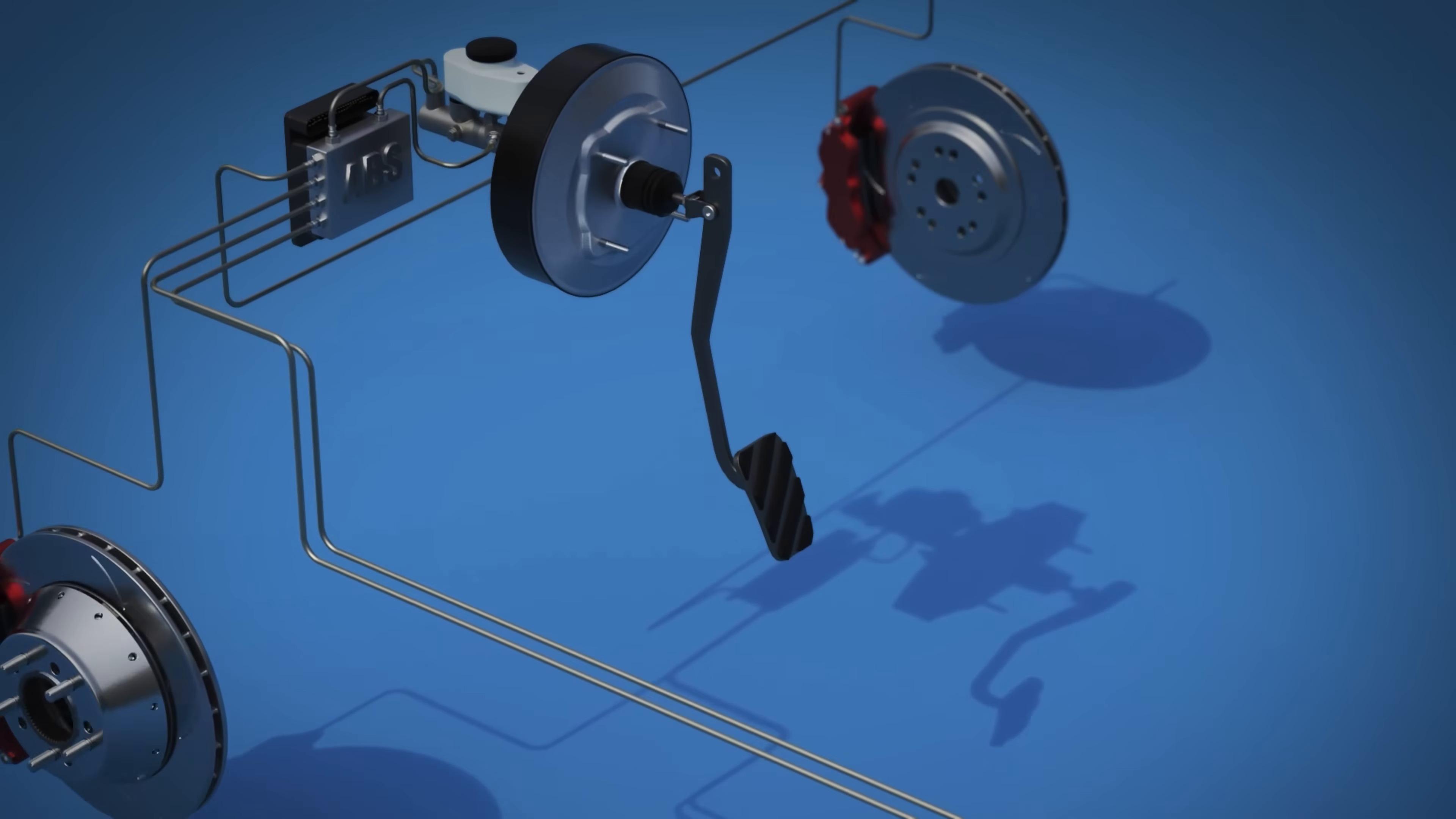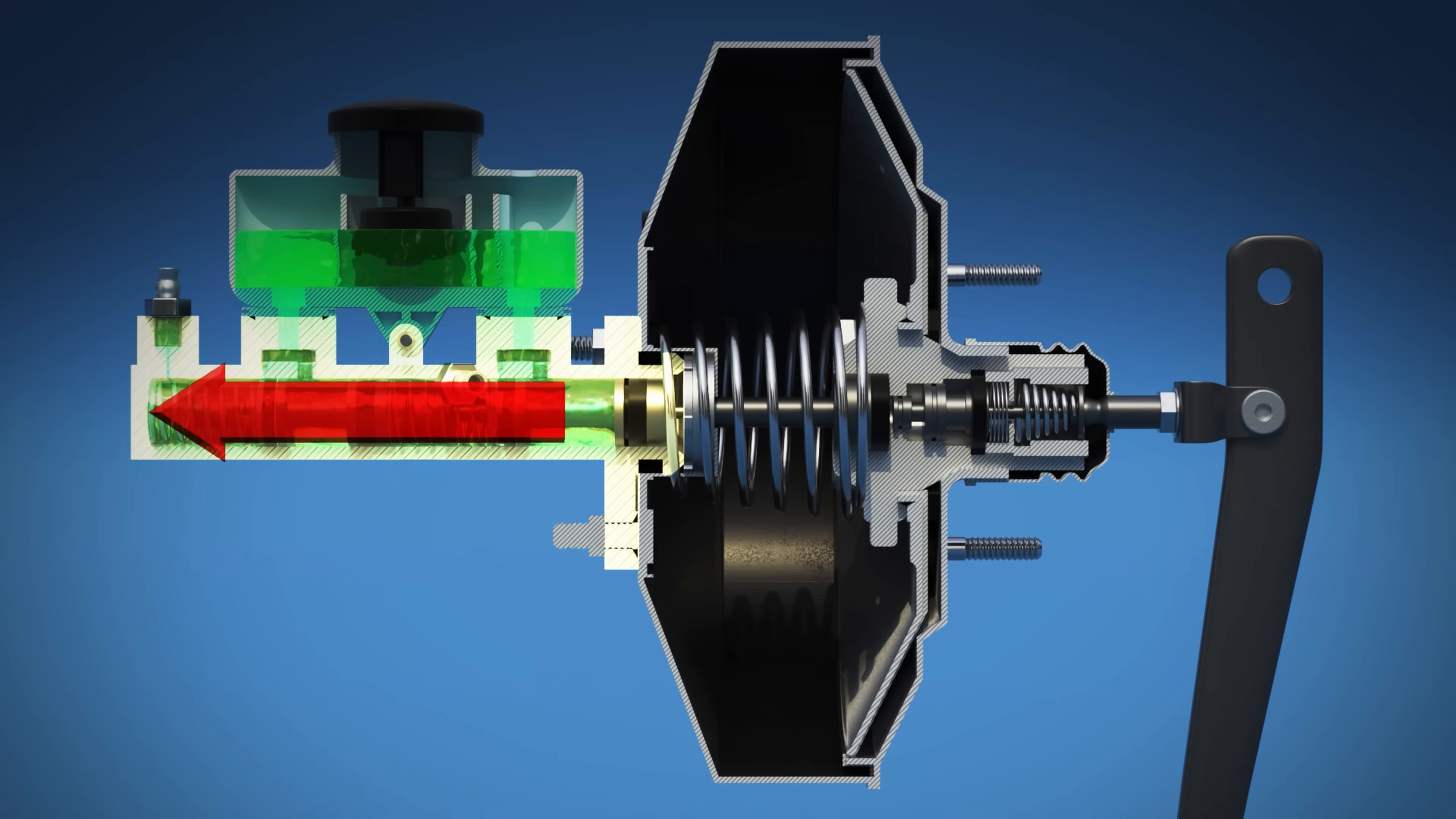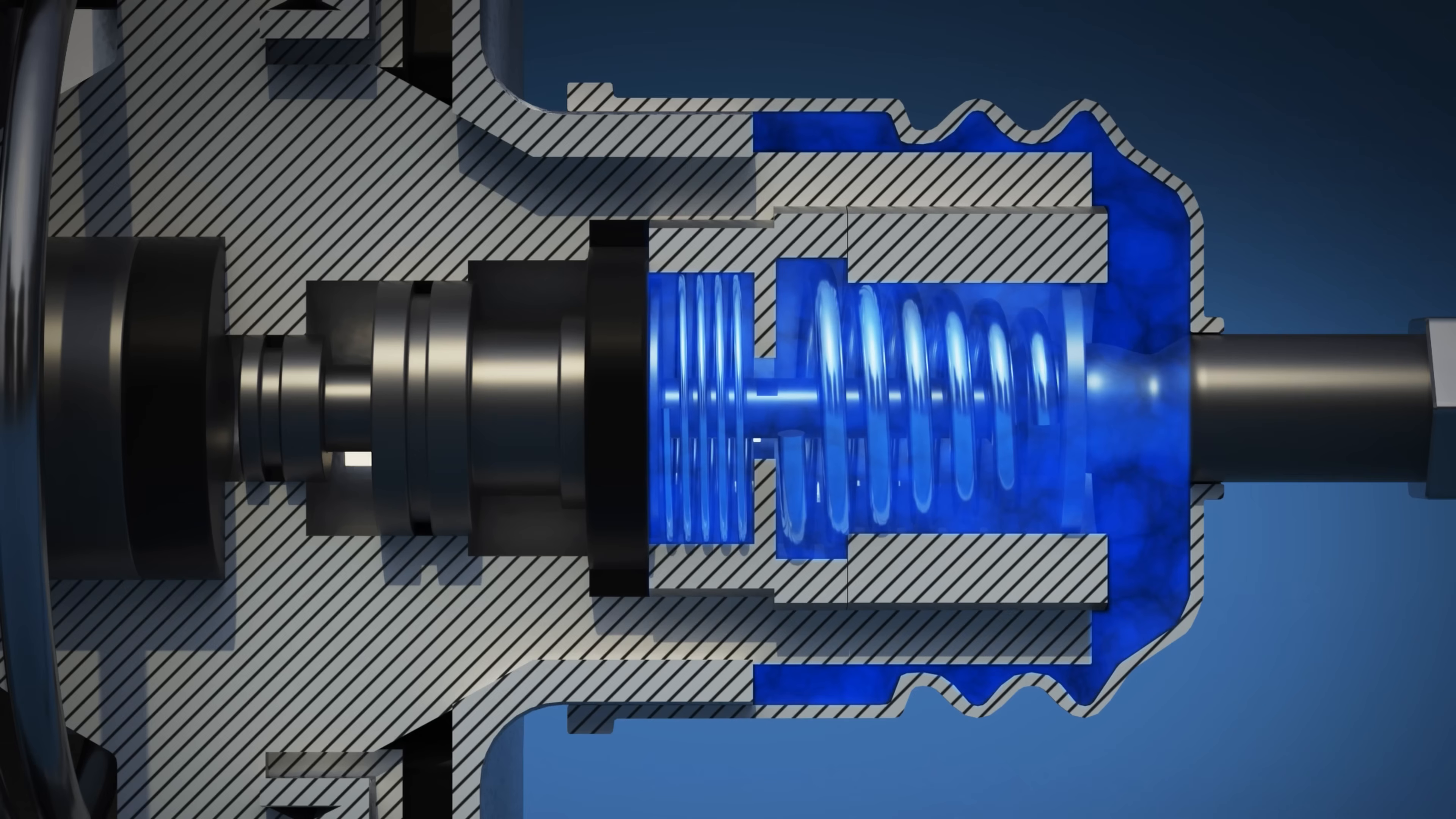Your vehicle's hydraulic braking system is activated the moment the brake pedal is pressed. This force then travels through a pushrod into the brake booster and master cylinder. Most brake boosters use vacuum from the engine to make applying the brakes easier by increasing the force exerted on the brake pedal.